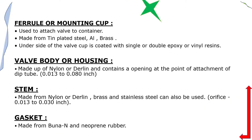Continuous spray valve assembly consists of: ferrule or mounting cap, valve body or housing, stem, dip tube, gasket, and spring. The ferrule is made from tin-plated steel, aluminum, or brass, with the underside coated with epoxy or vinyl. The valve body is made of nylon or Delrin and contains an opening of 0.013 to 0.080 inch. The stem is made from nylon, Delrin, brass, or stainless steel, with an orifice of 0.013 to 0.030 inch. The gasket is made from Buna N and neoprene rubber.